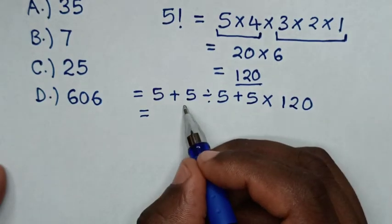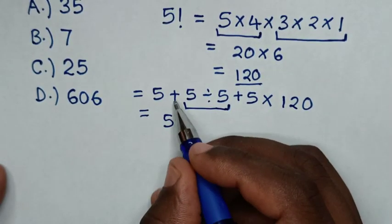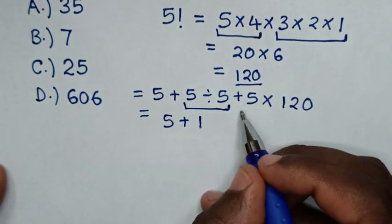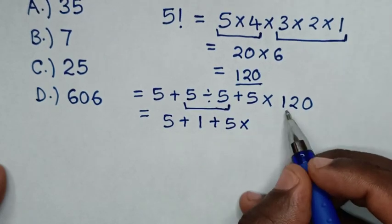In here we'll deal with division first. So it will be 5 plus, 5 divided by 5 is 1. Then plus 5 then times 120.